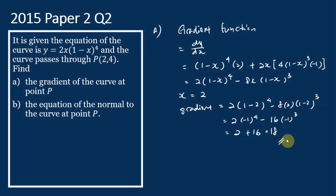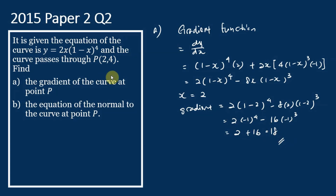So the gradient of the curve at point P (where x = 2) is equal to 18. This is the gradient of the equation at point P.